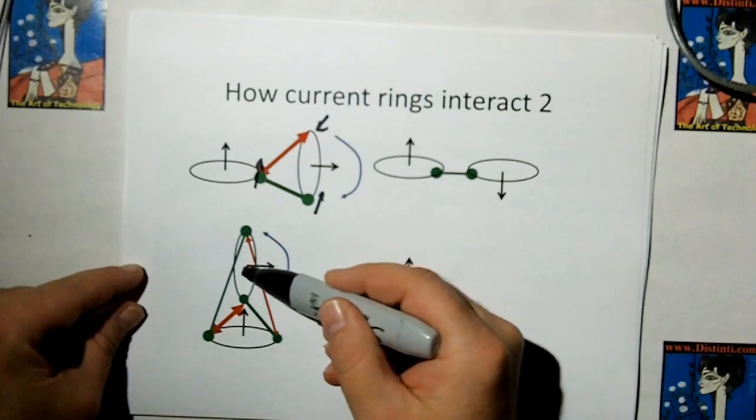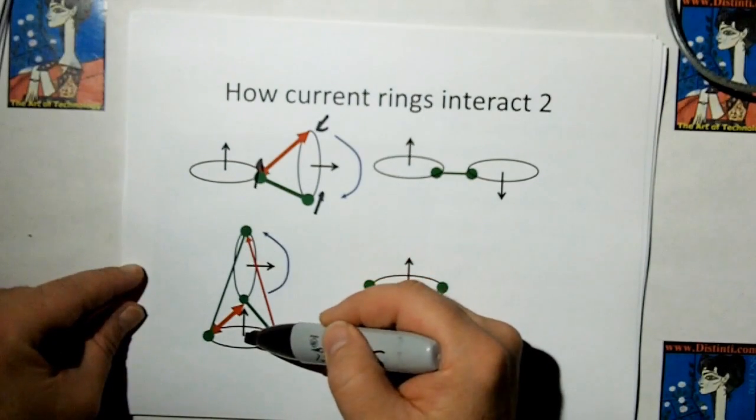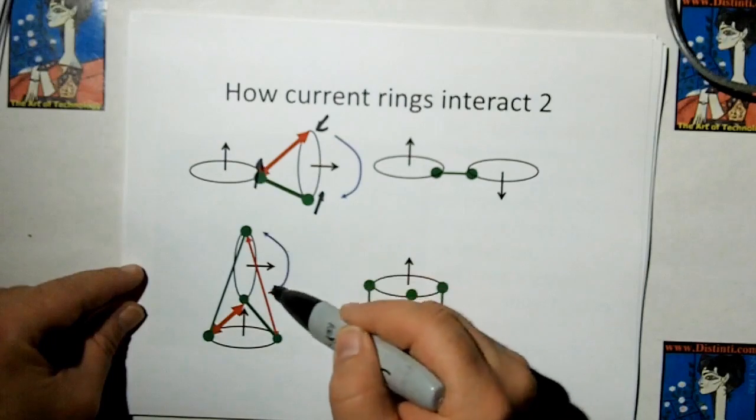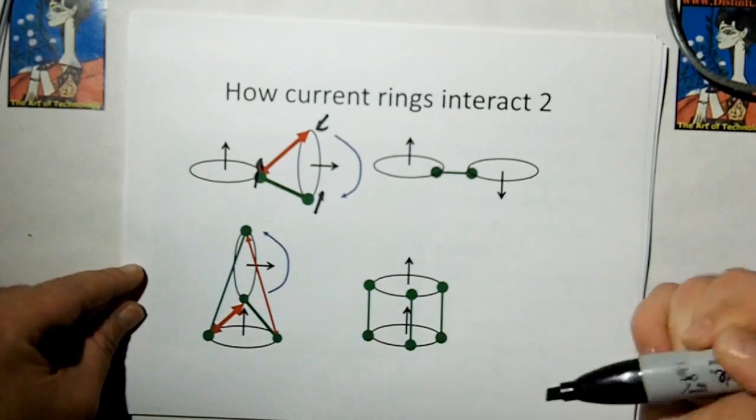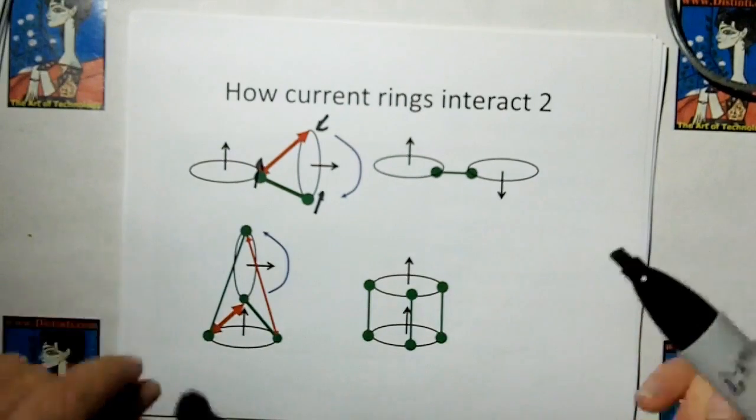Again, if you have one current ring above the other current ring, if you go through all that force again, you're going to find the above current ring is going to want to try to turn so it orients, so you get maximum attraction.